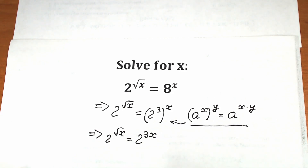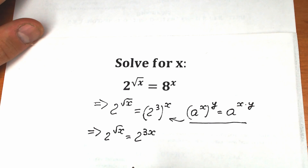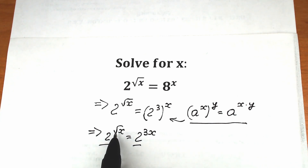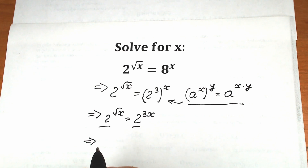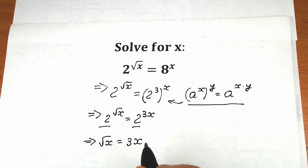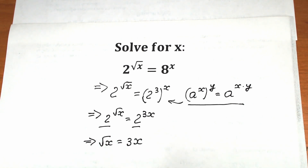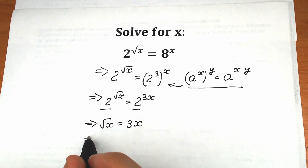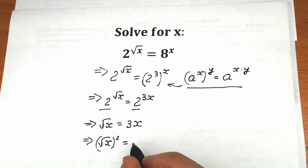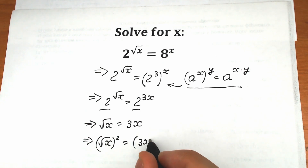Right now, as you can see, we have the same base, so we need to write an equation with our powers: square root of x equals 3x. So we have our equation: square root of x equals 3x. This is a basic equation with the square root, so we need to raise both sides to the second power. On the left side we have square root of x squared, and on the right side 3x to the second power.